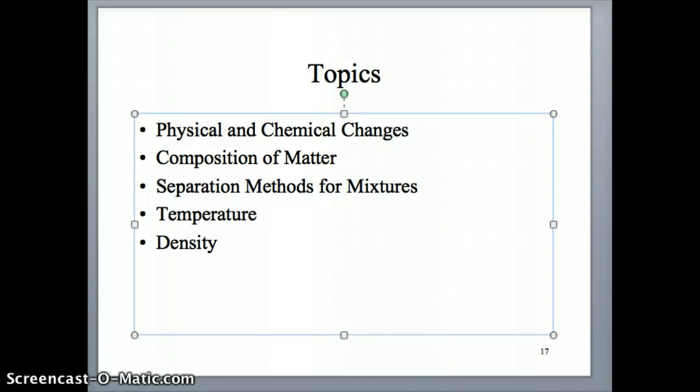Hi everyone, this is Dr. Noe. In this series of videos we're going to be talking about the topics I listed here. We're going to start by talking about physical and chemical changes and physical and chemical properties of substances. Then I'll talk a little bit about how matter is composed and how we can divide matter into mixtures or pure substances. Then we'll talk about how we can separate pure substances in a mixture using certain techniques. And then at the end we're going to talk about a couple of properties that we often measure for substances that we would be working with, which are temperature and density.